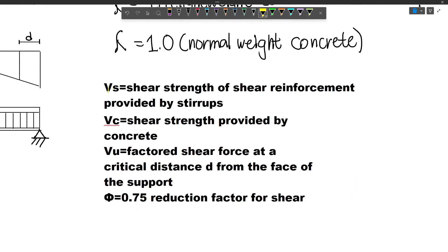VS is the shear strength of shear reinforcement provided by stirrups. VC is the shear strength provided by concrete. VU is the factored shear force at a critical distance d from the face of the support. And phi is our reduction factor. For shear, we use 0.75.